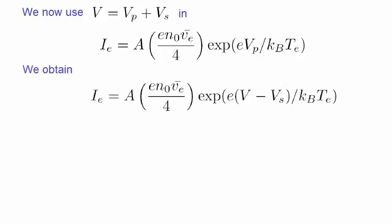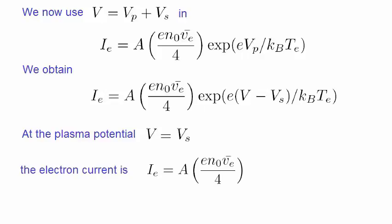Now let's assume that we are at the electron saturation current, which starts when V equals Vs. The electron temperature now reduces to this expression. So, as you can see, if we know the electron saturation current, we can actually determine the plasma density N0.